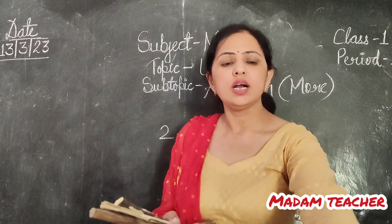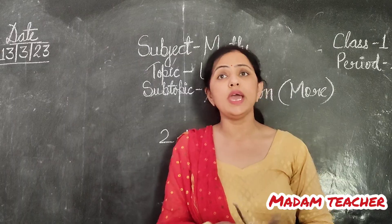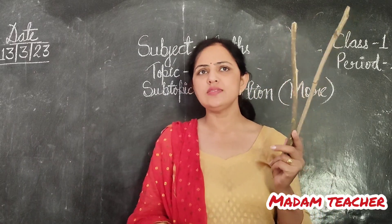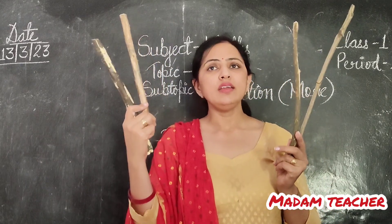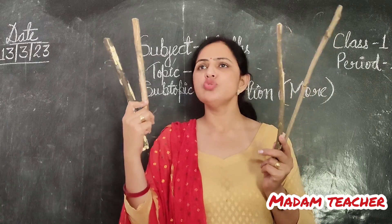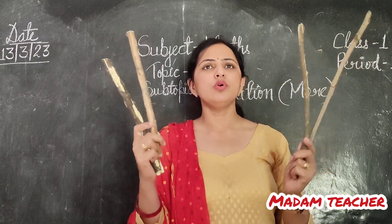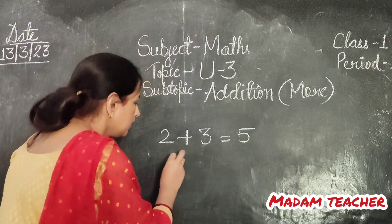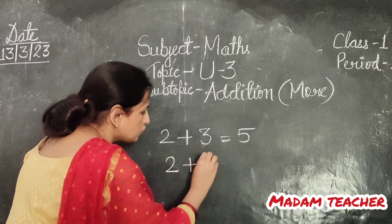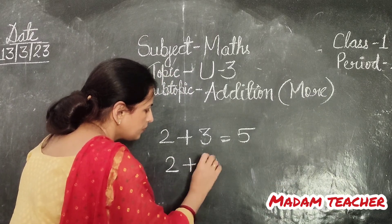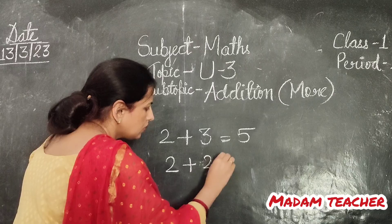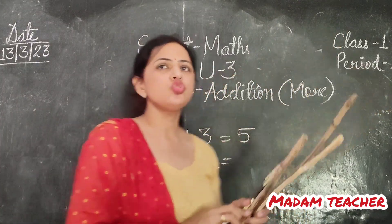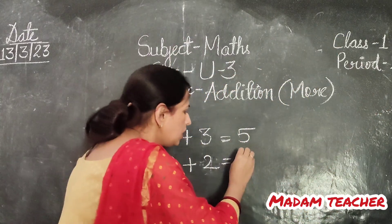Now tell me what will come — we will add 2 and 2. See, here are 2 sticks, and at my right hand 2 sticks. So when we add both — 2 plus 2 — it will come 1, 2, 3, 4. So it will be 4.